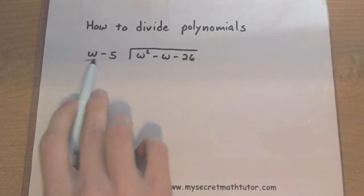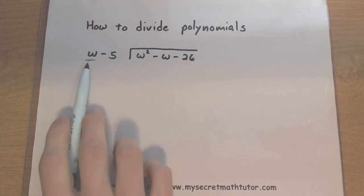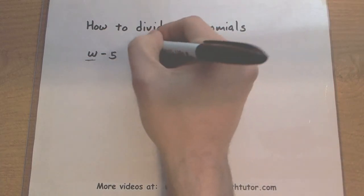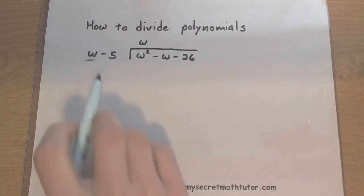So first, we want to just observe these two first terms here and think to ourselves, what multiplied by w will give us a w squared? Well, the only thing that will happen will be a w. So w times w gives us a w squared. So we're going to put that guy on top.